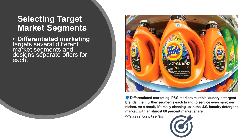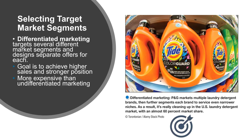Differentiated marketing targets several different market segments and designs separate offers for each. The goal is to achieve higher sales and a stronger position, but it's a lot more expensive. For example, Procter and Gamble has many different types of detergent, and based on different types of customers — some that like color, some that like bleach, some that like baby products, some that like no perfume, some that like a lot of smell — all of those different markets have to be targeted differently. Additionally, different geographic locations and different price points are going to be targeted differently. So it's very expensive to target all those markets, but if you do it well, there's a lot of profit to be made.